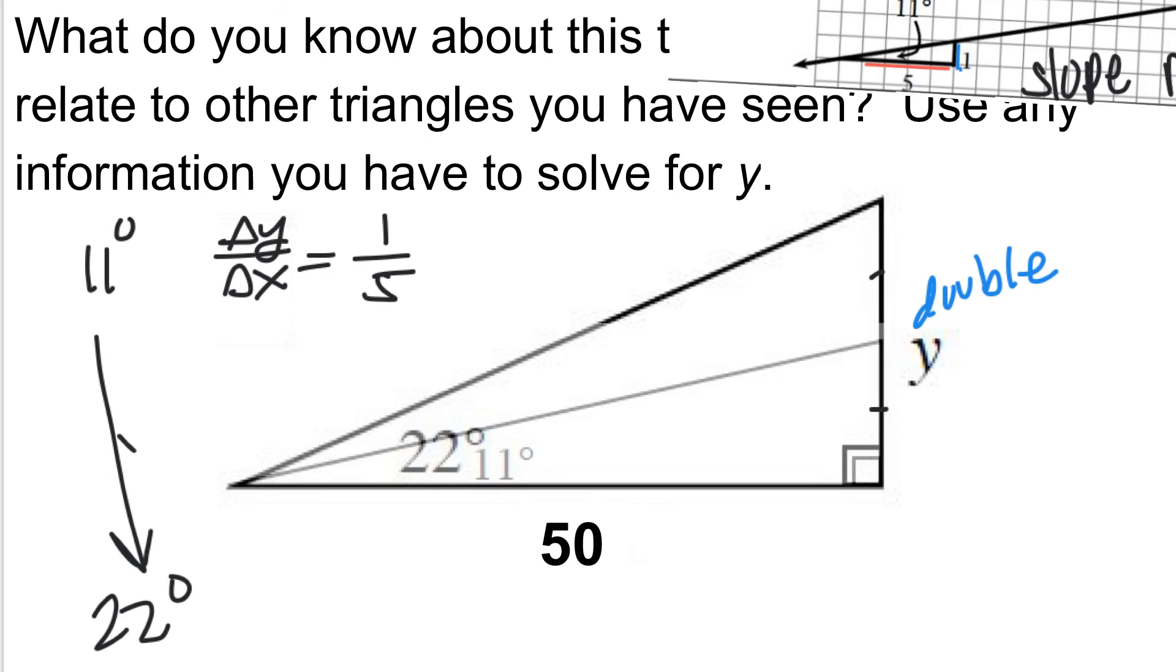What's 1 over 5 times 2? You probably already guessed it - it's going to be 2 over 5. So I just generalized it. I know that my slope ratio for 22 degrees is always, always, always going to be 2 over 5. Now that I know that, let's set up an equation.